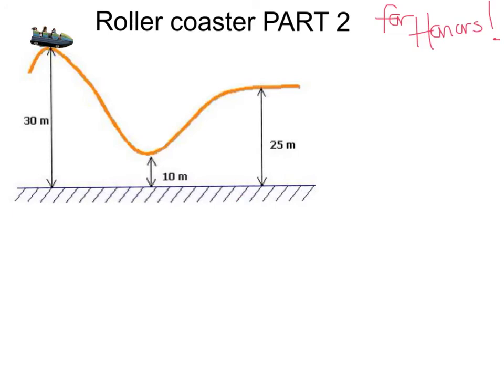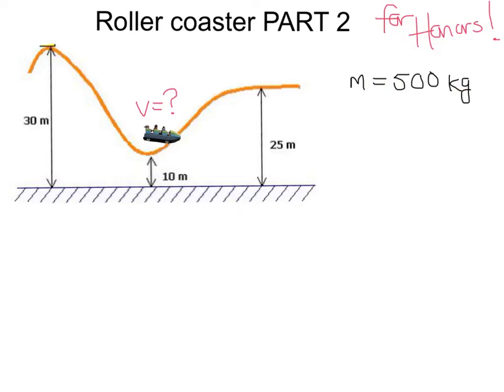Roller Coaster Part 2 for Honors Physics. As the roller coaster starts at a height of 30 meters, what's the velocity of the coaster at the 10-meter height? Let's assume the mass of the roller coaster is 500 kilograms. How is energy conserved as it goes from the top of the coaster to the bottom of the first hill? The initial energy at the top must equal the final energy at the bottom of the first hill, expressed as sums of kinetic and potential energy at both locations.